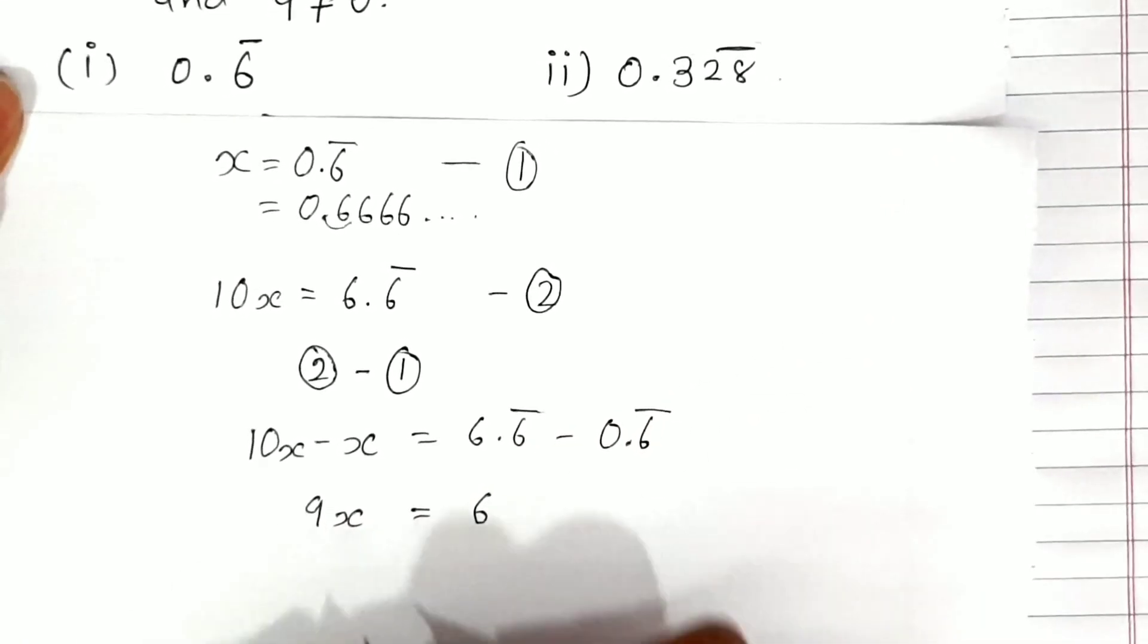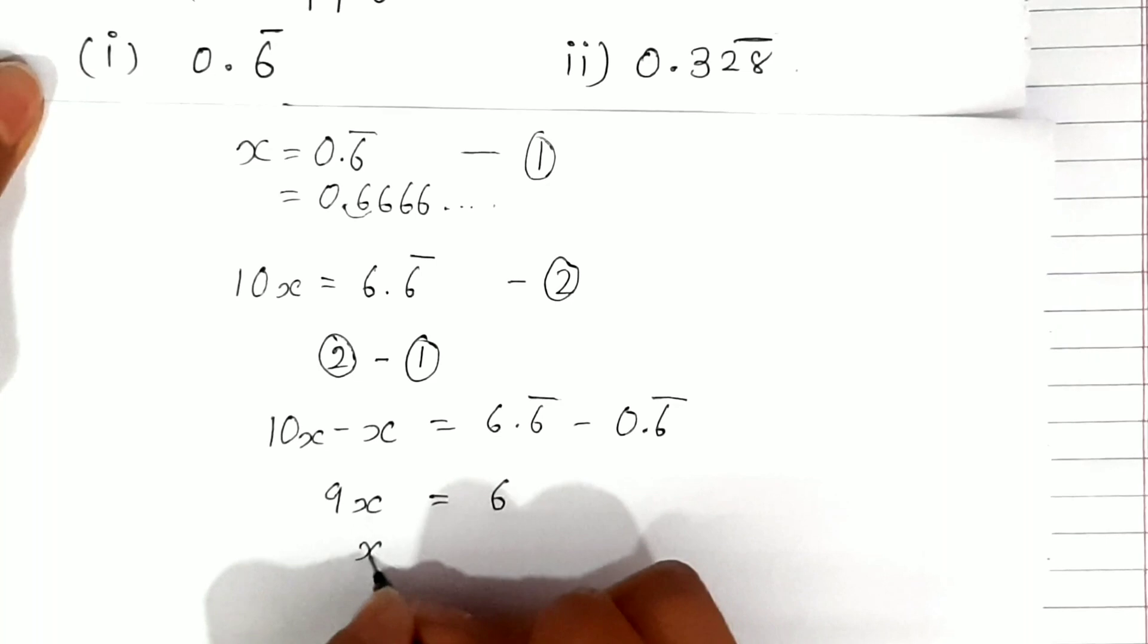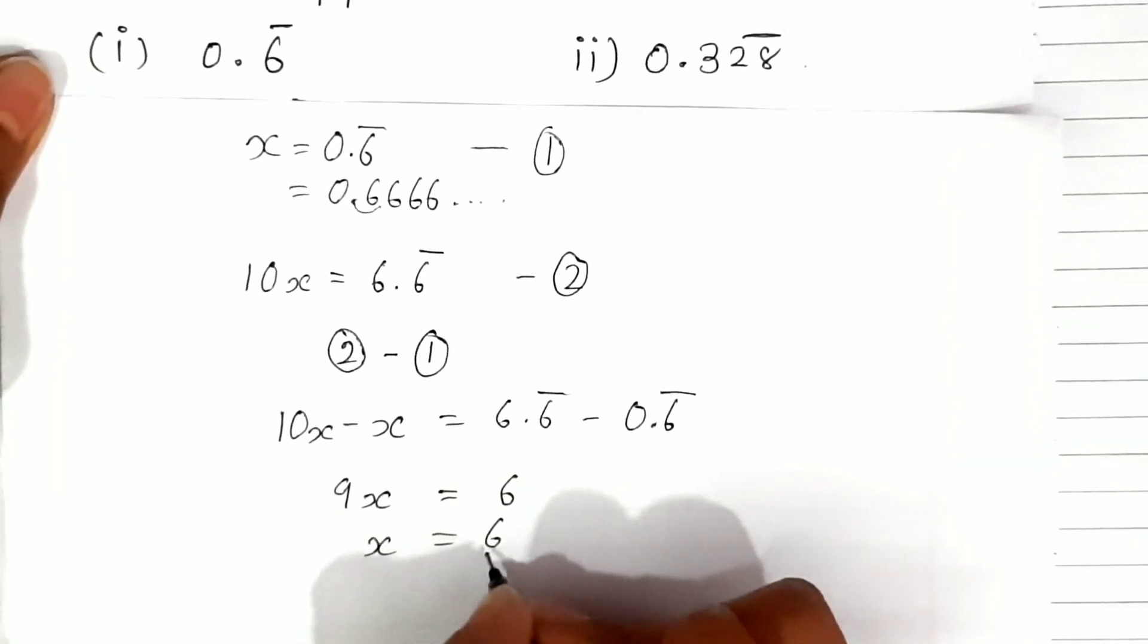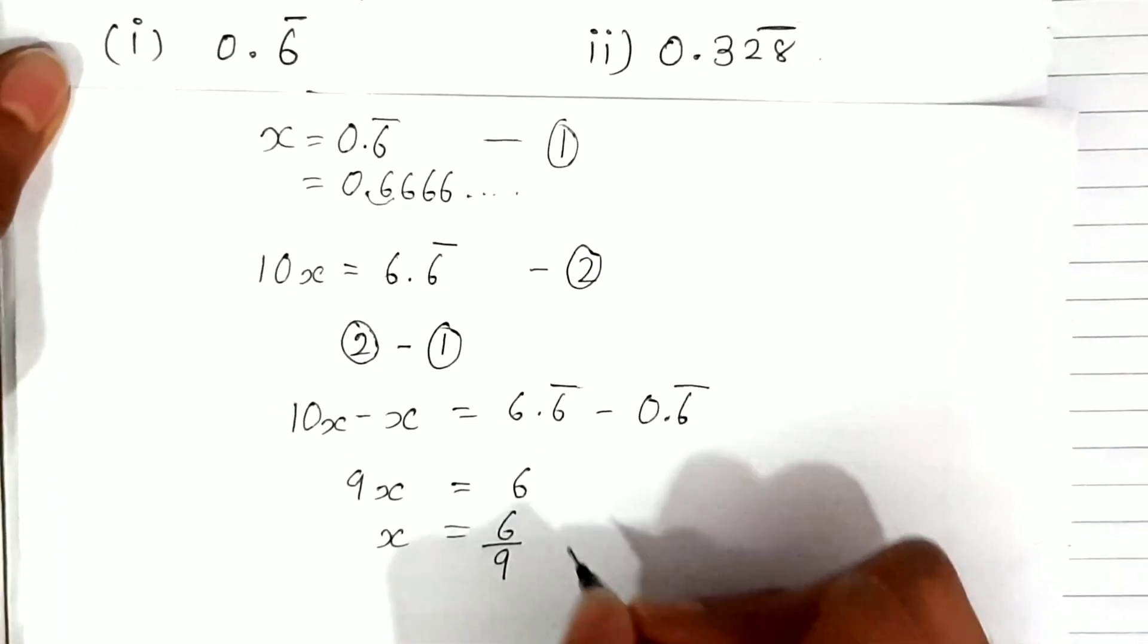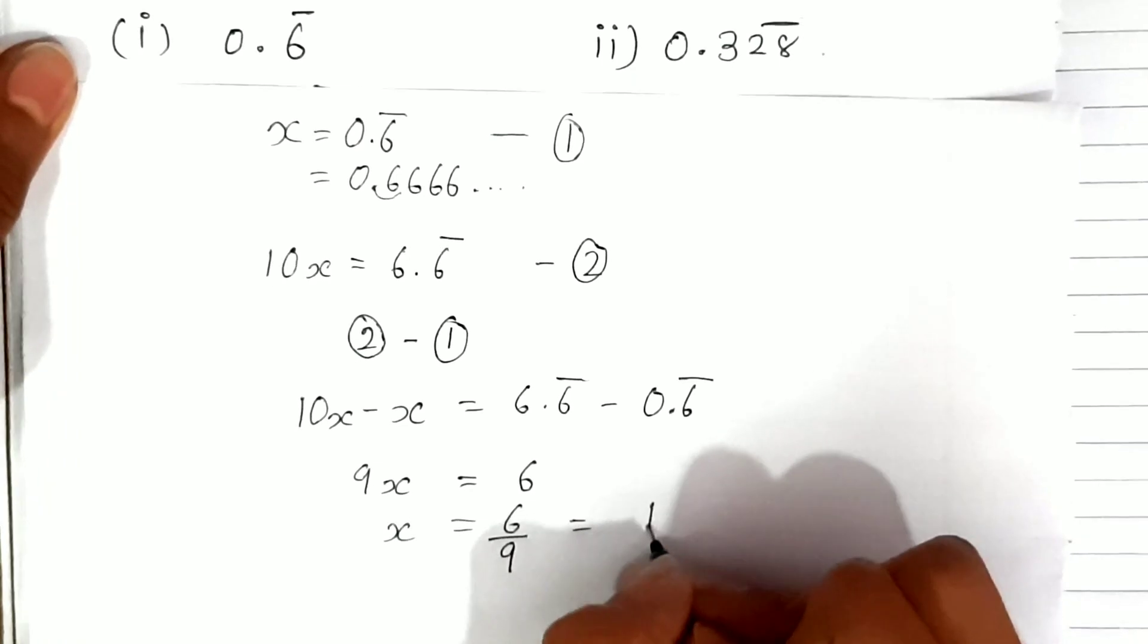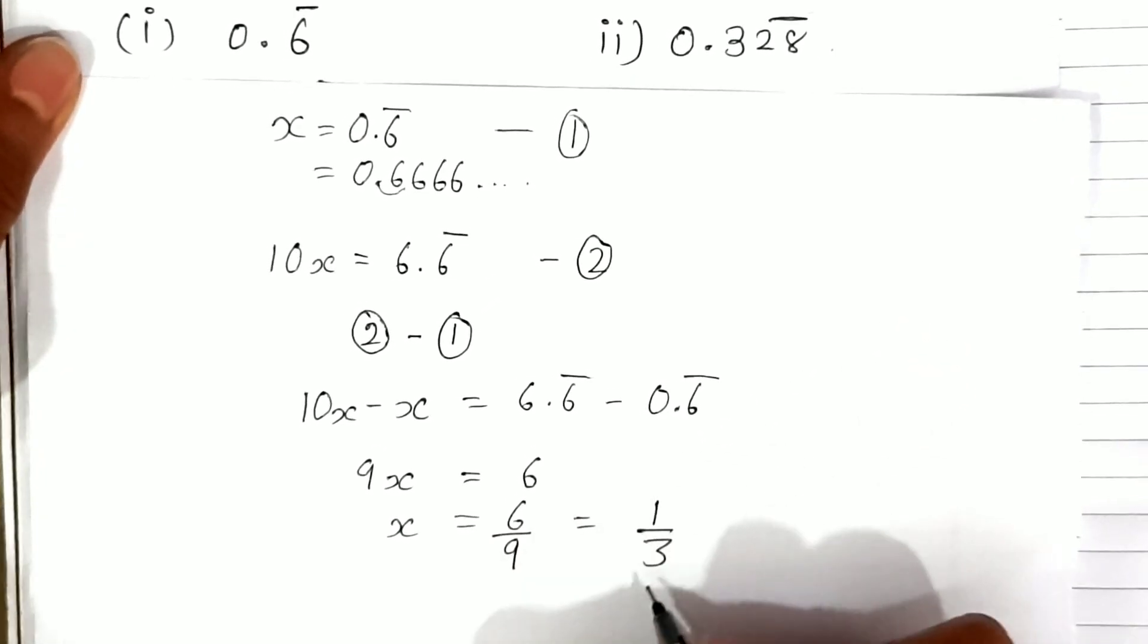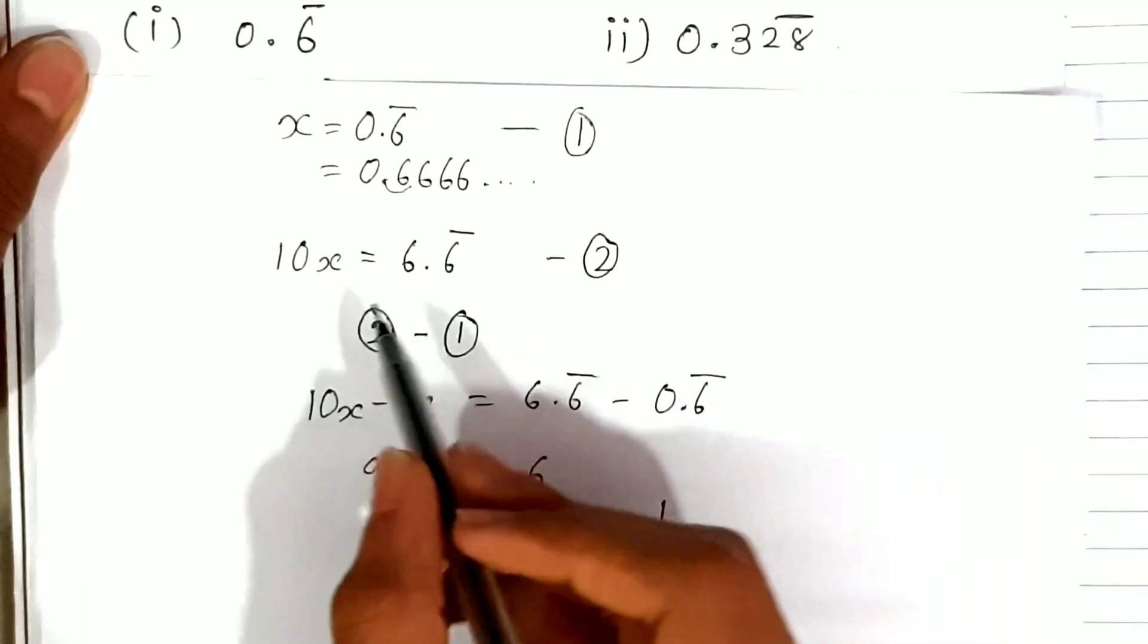So 9x = 6, which gives us x = 6/9. We can also write 6/9 as 2/3, so we can write 0.6̄ = 2/3 in p/q form, that is in fraction form.